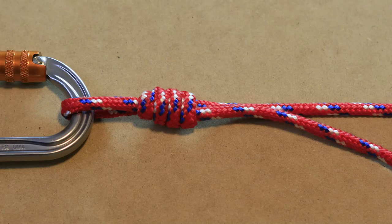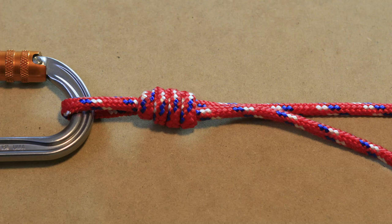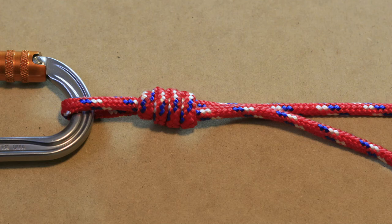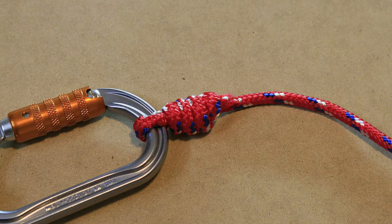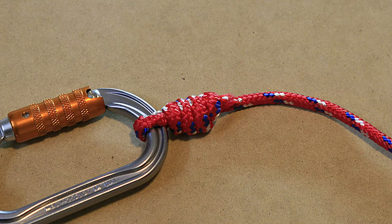Now slide the knot until it sits against your hook or lure by holding the knot and pulling on the standing part. Next finish the knot by tightening it all the way by pulling on the working end. Clip off the remaining working end just outside of the knot and you are ready to go.